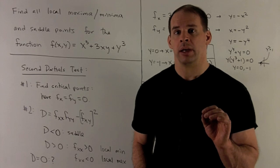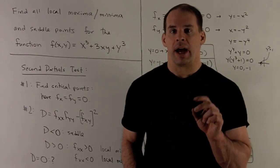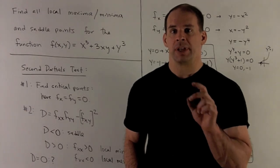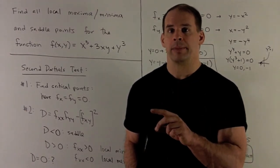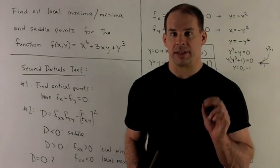Step one, we find the critical points. These will be the points where I take the partial with respect to x, take the partial with respect to y. We want to know where both of those are equal to 0 at the same time.